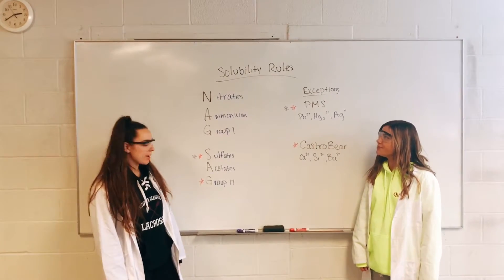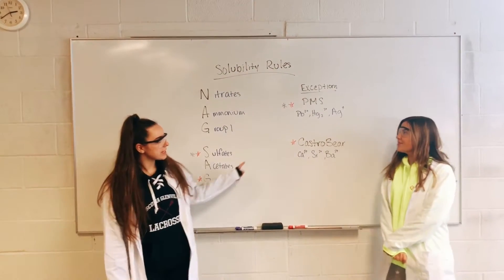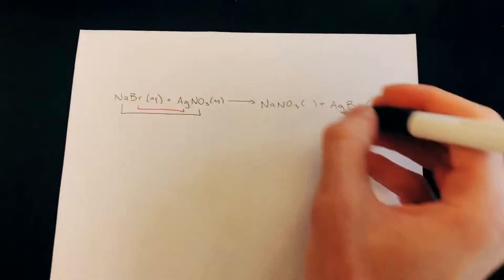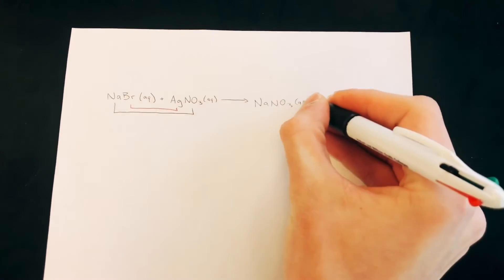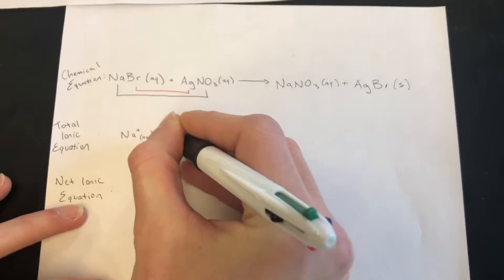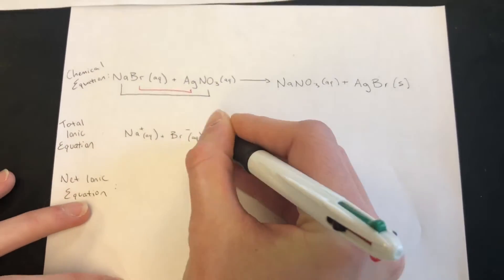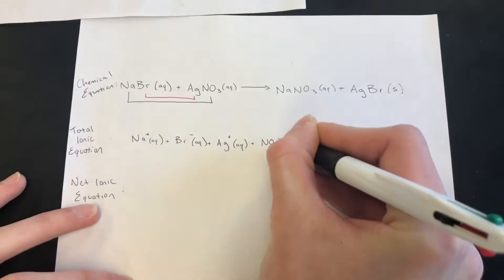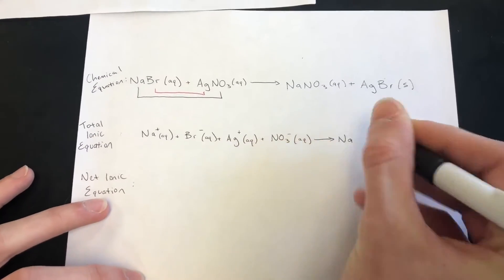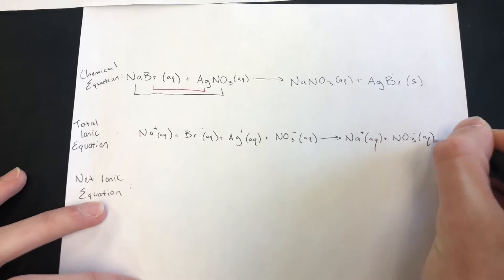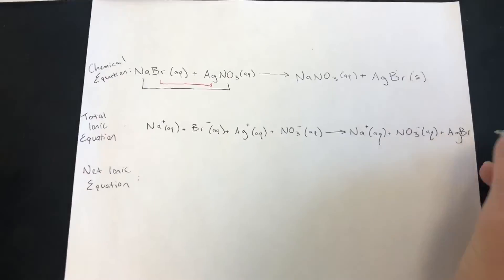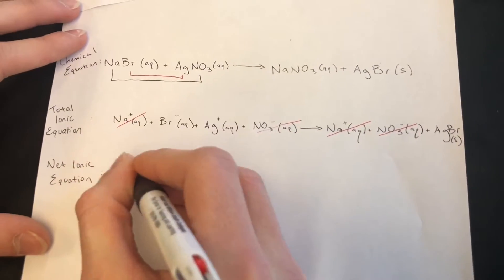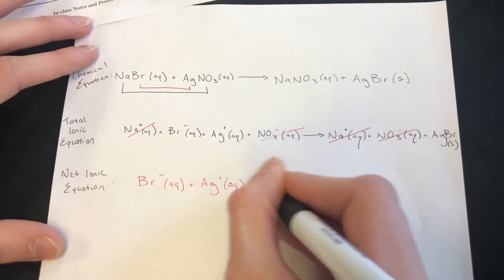Here are your solubility rules — the stars represent the exceptions. The insoluble compound in your reaction is AgBr, because Br is in group 17 and it's paired with Ag. For the total ionic equation, both compounds break down into their ions, and for the net ionic equation, the spectator ions on both sides of the equation cancel.